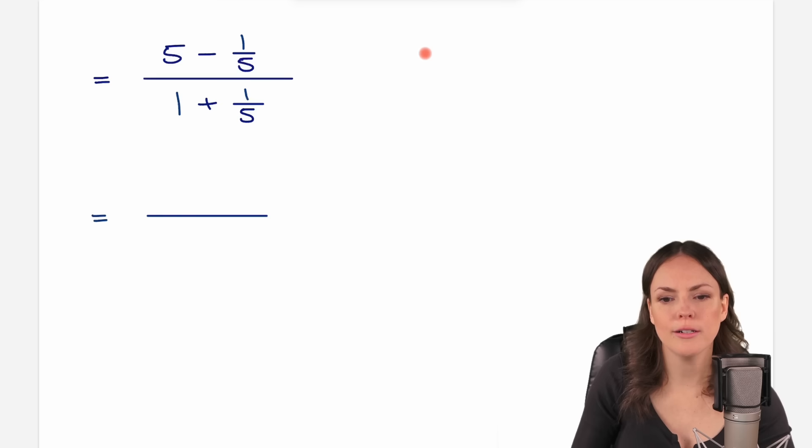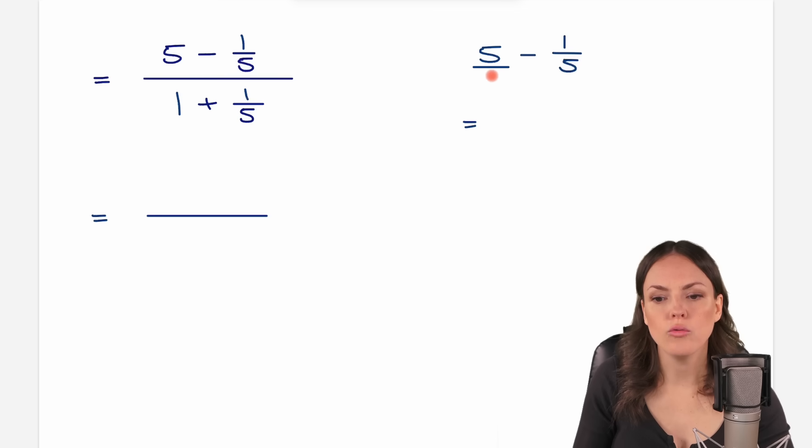So let's start with our numerator, where we have 5 minus 1 over 5. How can we calculate this? We can write this number as a fraction as well, so we can write it as 5 over 1, and to be able to subtract two fractions, they have to have the same denominators, which is not yet the case here, but we can find a common denominator.